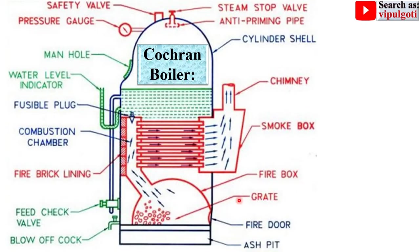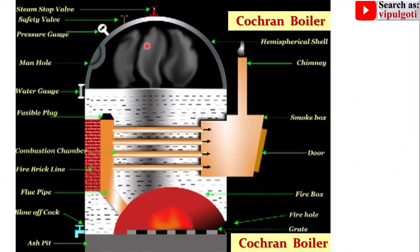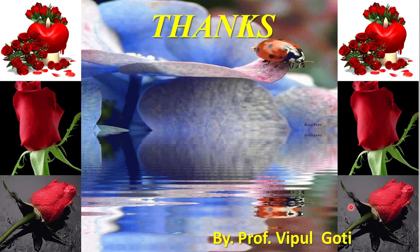This figure can be used in examinations — it is a very simple figure. Here is one more image of the Cochran boiler to understand its construction and working. Brick linings are visible, provided to protect the boiler from high-temperature flue gases in the combustion chamber. If you want to see more engineering videos, please subscribe to my YouTube channel and go to the playlist. Thanks, and please press the like button to appreciate this video.